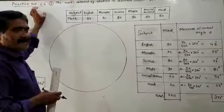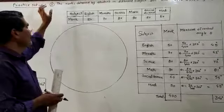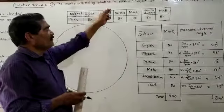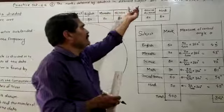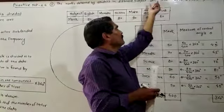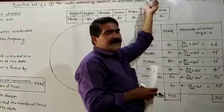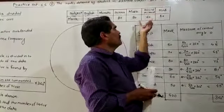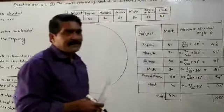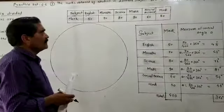Practice set 6.6, second example. The marks obtained by a student in different subjects are given in a table. You have to draw the pie diagram.